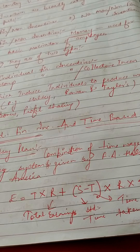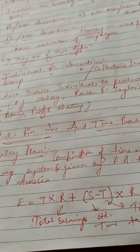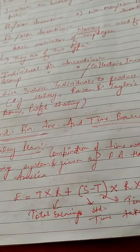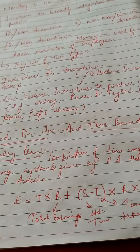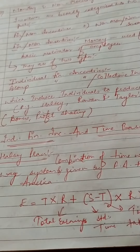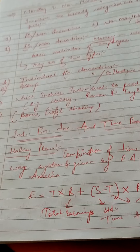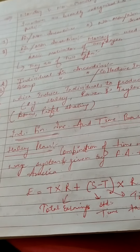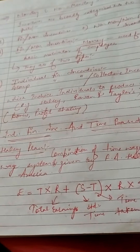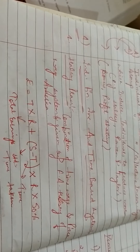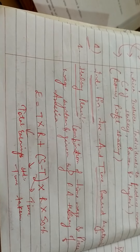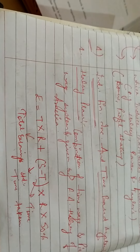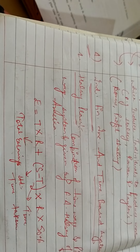First is the Halsey plan. The Halsey plan is basically a blending of a time-based system and a piece-based system. On one hand, it ensures minimum wages, and on the other hand it provides an incentive for more production. We must ensure that the minimum wages of 100% are guaranteed.